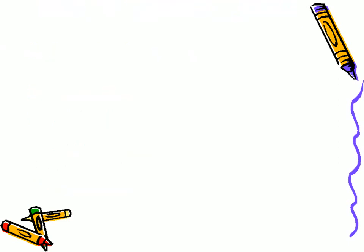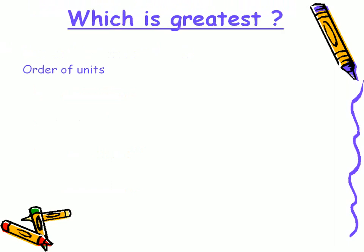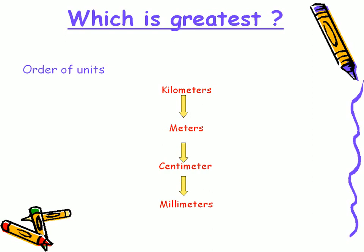Let's have a glance at the hierarchy of these metric units. On the top comes kilometers, followed by meters, and then by centimeters. The smallest among these units are millimeters, which lie lower to centimeters in order.